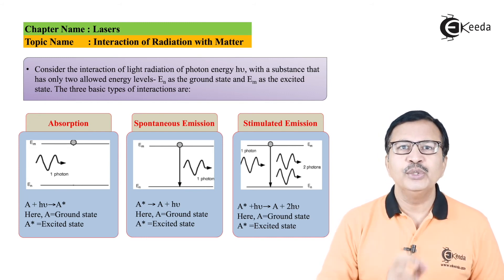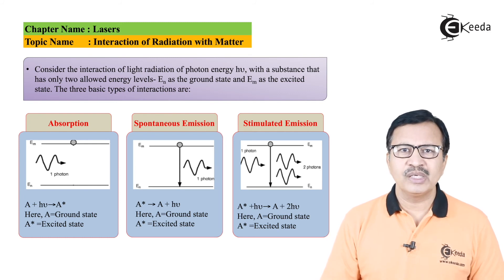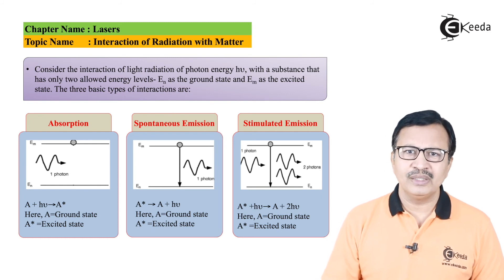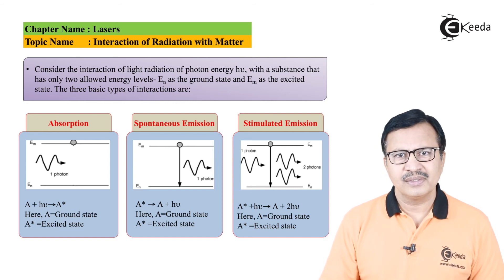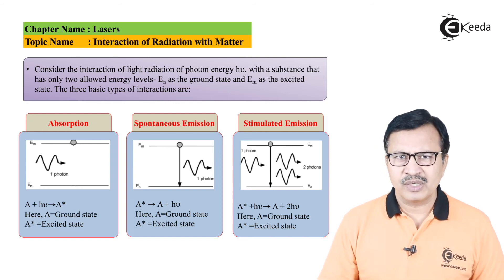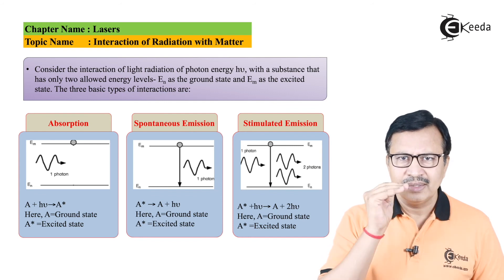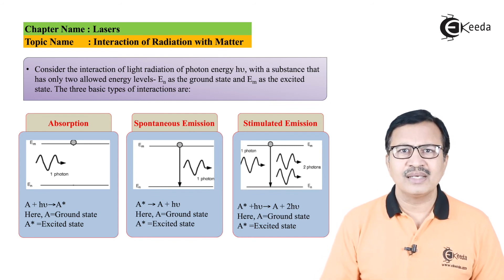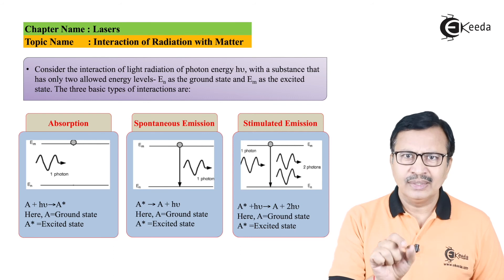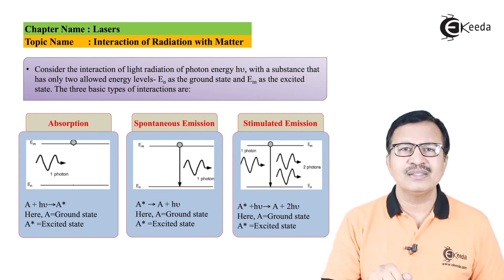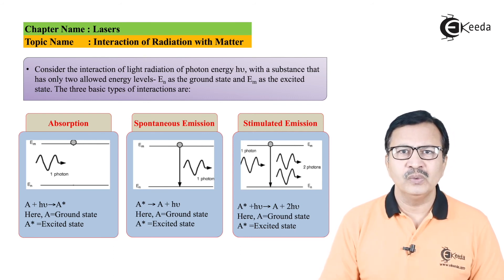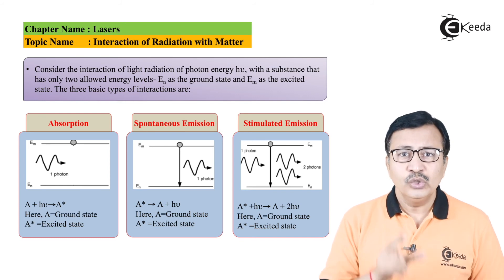And this can be represented by a very simple equation: A* + hν = A + 2hν. A* which is representing an atom in the higher energy level, an excited state, plus hν, the photon that actually stimulates the transition, is equal to A plus 2hν.